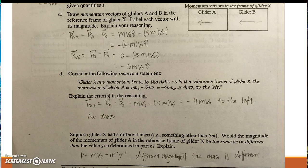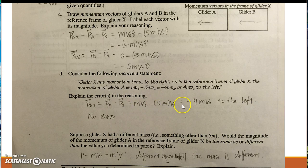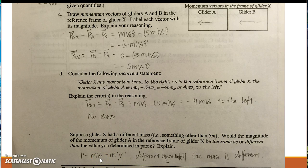Part D: the momentum of glider A and glider X equals the momentum of glider A divided by the momentum of glider X, giving me negative 4M times velocity, so it moves to the left — this statement is correct. If the masses are different, they will have different momenta. Thank you for listening, good night.